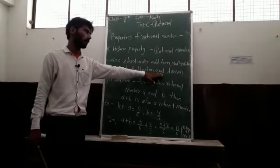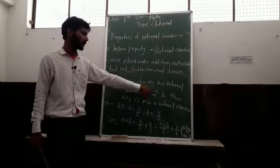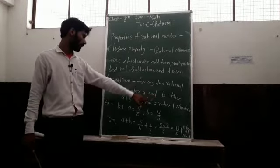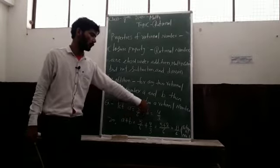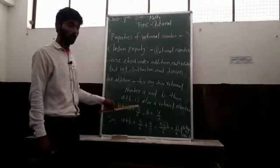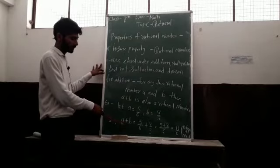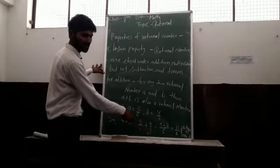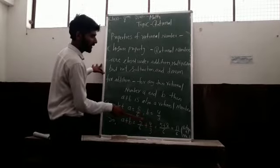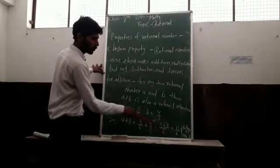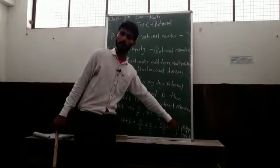But if you subtract or divide them, you cannot get a rational number again. Now talking about addition, let's take an example. Let a equal 5/6 and b equal 4/3. If you add these two rational numbers, a plus b equals 5/6 plus 4/3. First, take the LCM of denominators. 6 divided by 6 is 1, multiply by 5 is 5, plus 2 times 4 is 8, giving 13/6. Again we get a rational number.